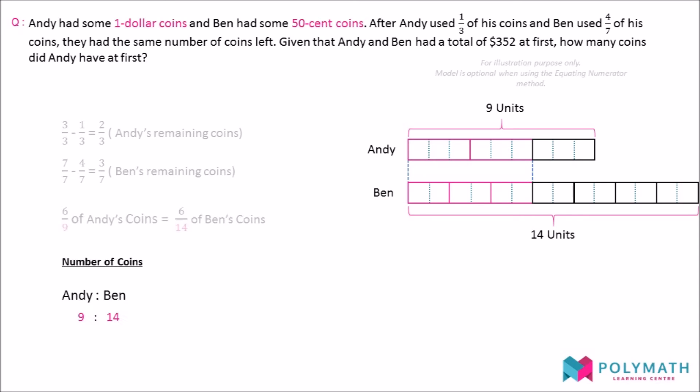Even though we have the ratio of the number of coins, we must remember that the values of the coins are different. Andy's coins are worth $1 each, while Ben's coins are only worth $0.50 each.